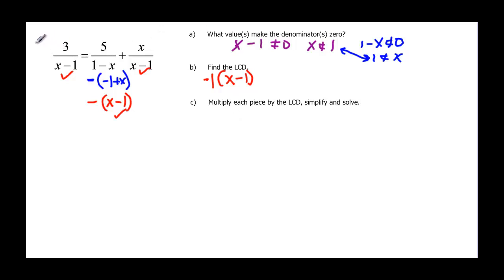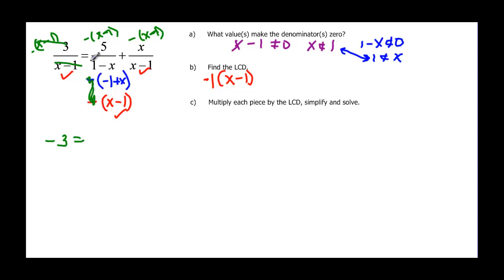When we multiply everything by the least common denominator, every term on both sides gets multiplied by it. The x minus one cancels the x minus one, leaving a negative times three. On the other side, the negative cancels the negative, and the x minus one cancels the x minus one, so we don't have anything left in that denominator — we just have five. Then the x minus one cancels x minus one, but we still have plus a negative x.